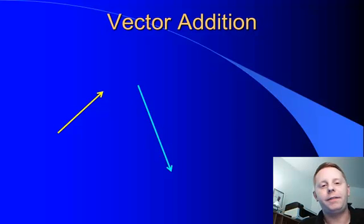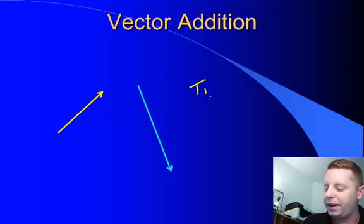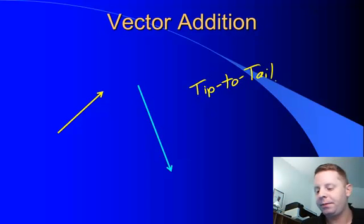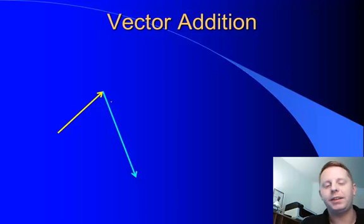Now, adding vectors is a fairly straightforward process. Graphically, here we have two vectors, a yellow vector and a light blue vector. If we want to add them, what's really nice about vectors is you're allowed to move them around. You can't change their direction or their length, but you can slide them wherever you want. So the trick to adding vectors is to always line up all your vectors so that they are tip to tail. So if we slide these around and make these tip to tail, our light blue vector now moves so that its tail is touching the tip of the yellow vector.